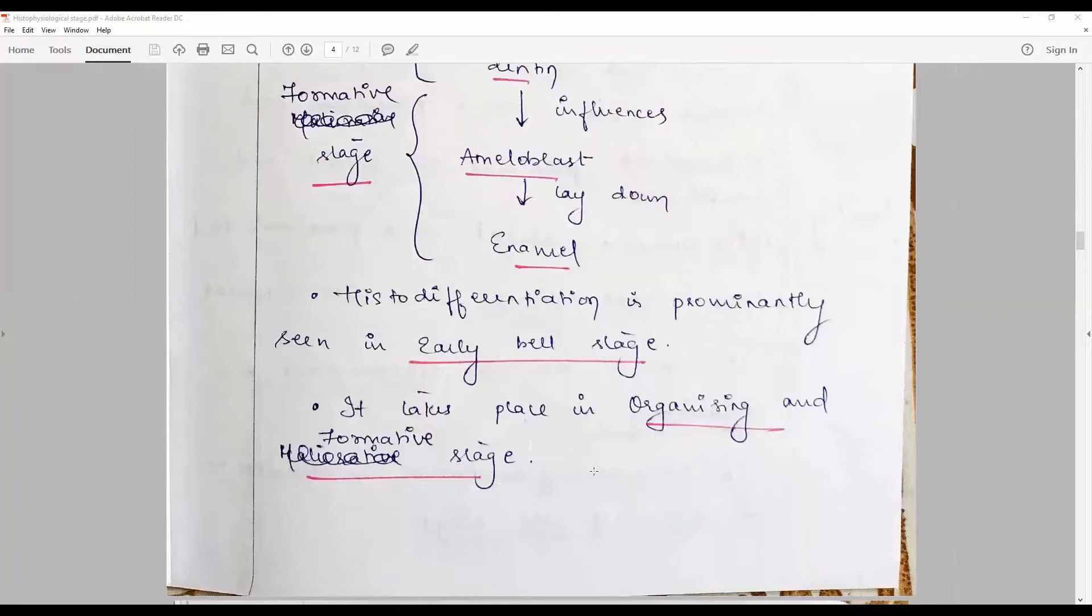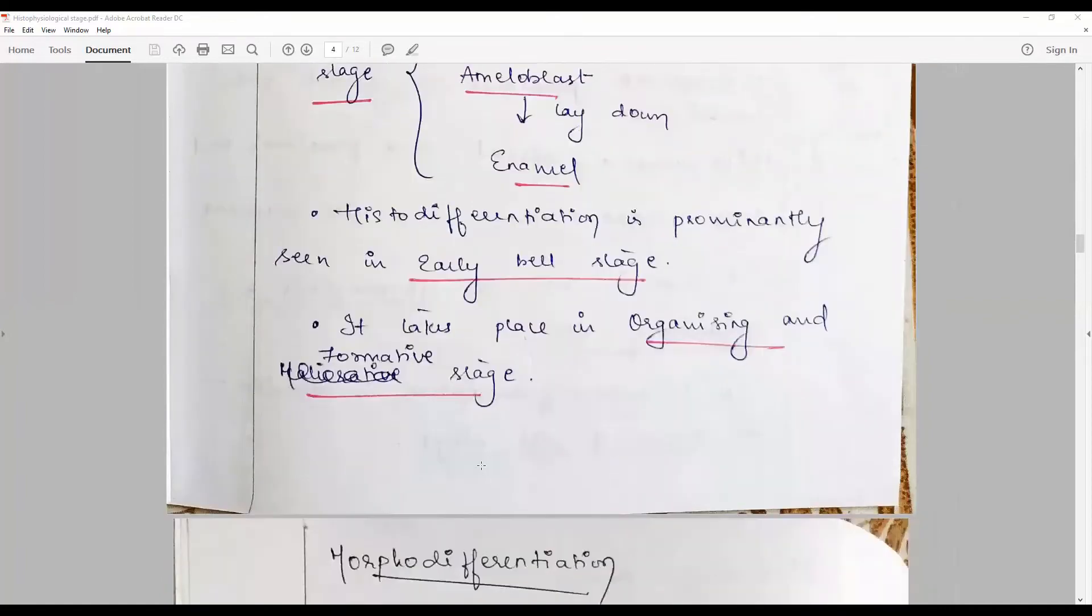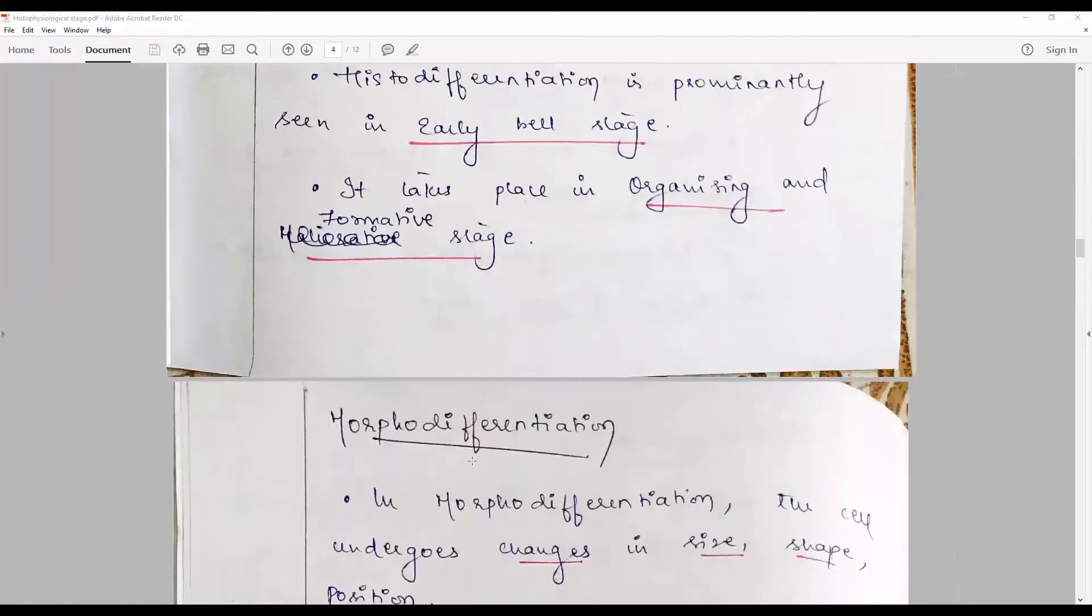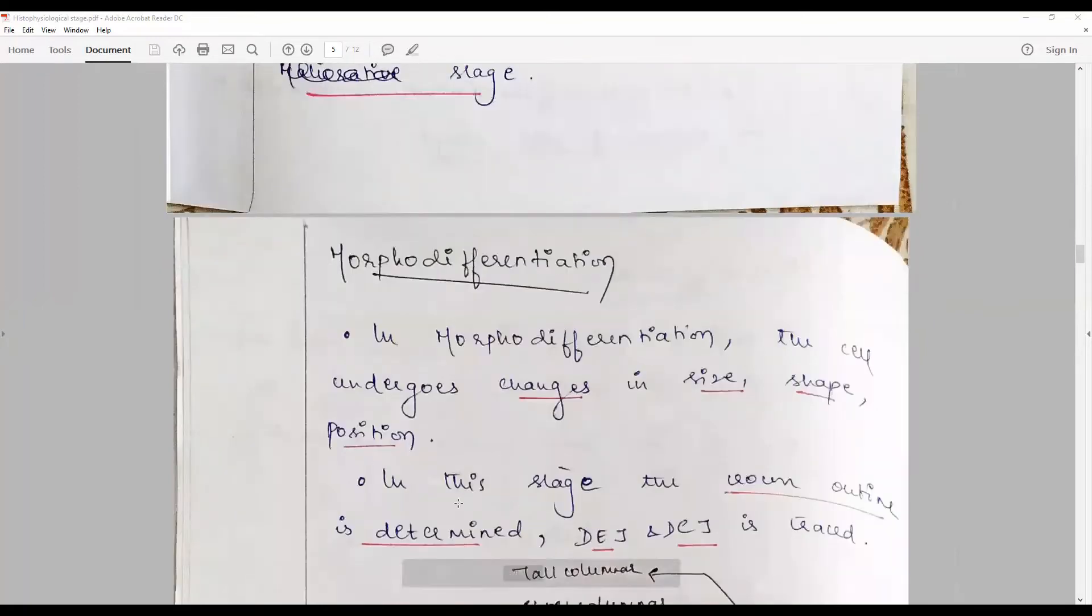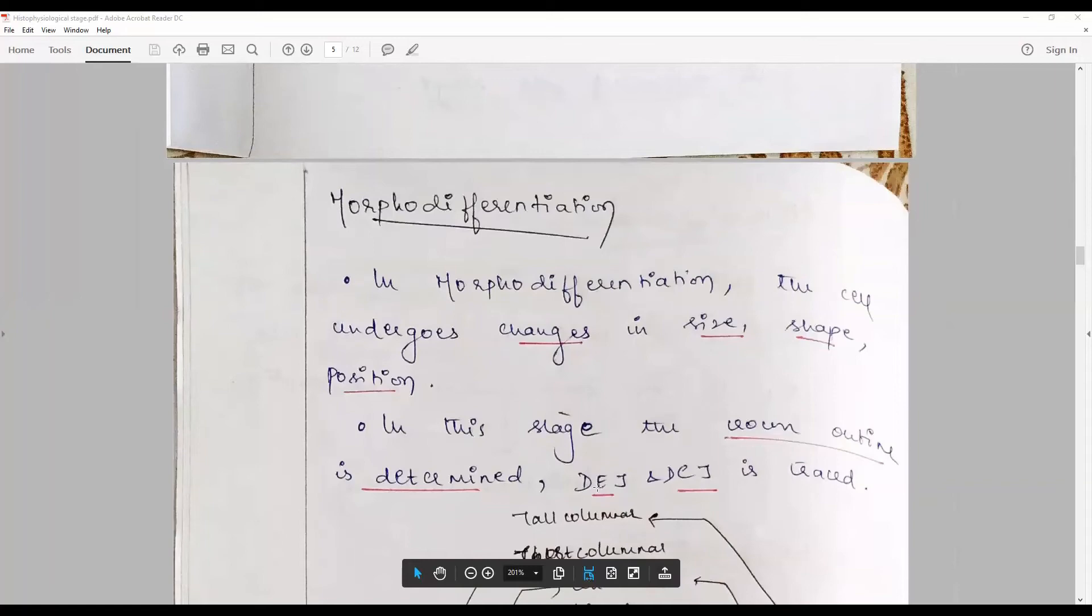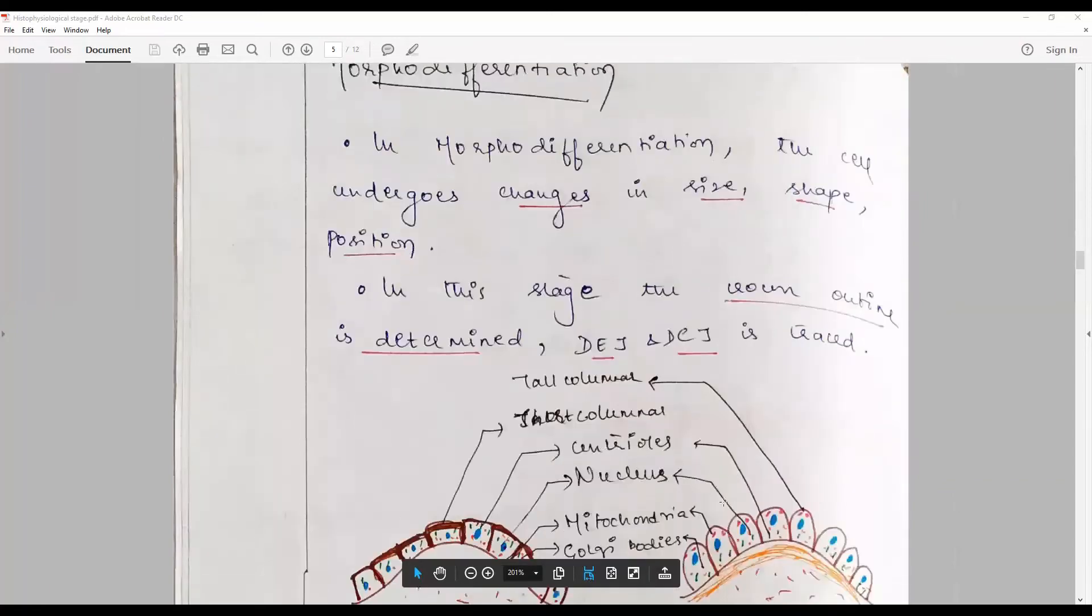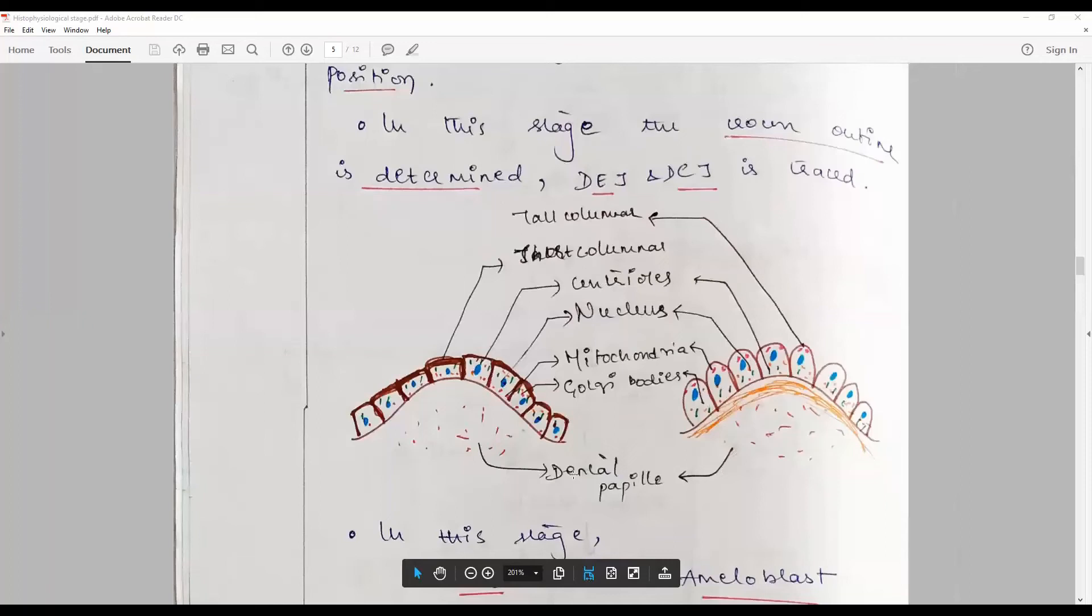Morpho differentiation: we say that changes in size, shape, and position for becoming big. In this stage, the crown outline is determined, the future dentine enamel junction and dentino-cemental junction is traced, and this is how a good diagrammatic representation from short columnar to tall columnar is shown.